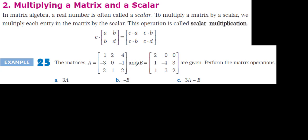We are going to study about multiplying a matrix by a scalar. In matrix algebra, a real number is called a scalar. When you multiply a scalar by a matrix, it is going to be multiplied by each entry — c times a, c times b, c times c, c times d. It can also be another letter, like f, so it's going to be c times f.